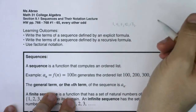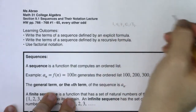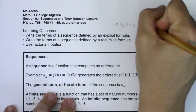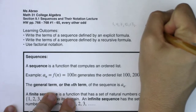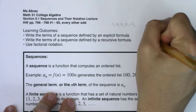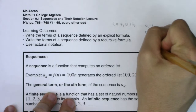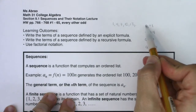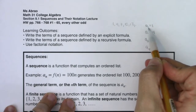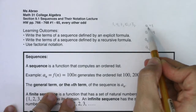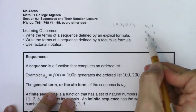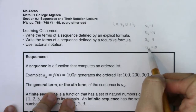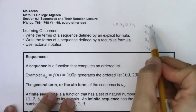I haven't given you a formula — I've just laid out the numbers in front of you. Let me give you some notation. I would say a sub 1 equals 1, a sub 2 equals 4, a sub 3 equals 7, a sub 4 equals 10, and a sub 5 equals 13. The subscript refers to the position in the list — a sub 1 is the first number, a sub 2 is the second, and so on.